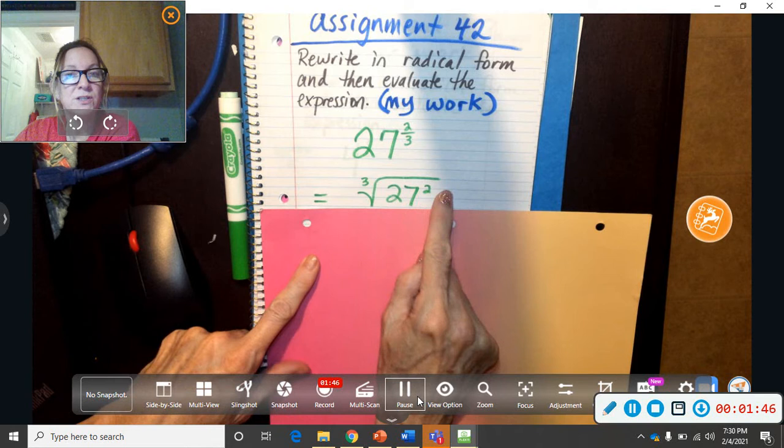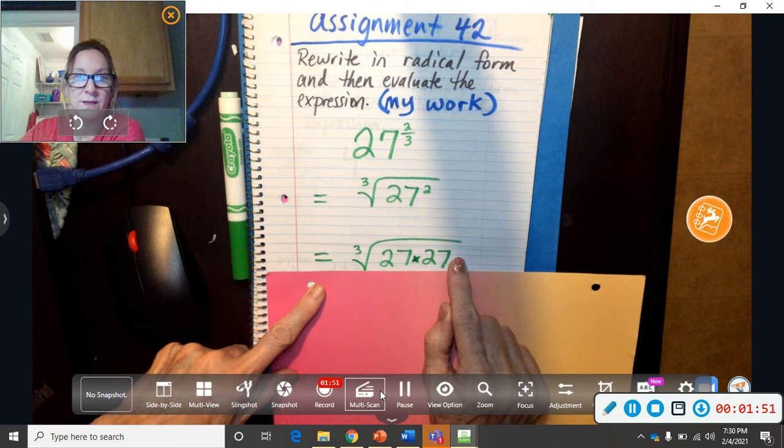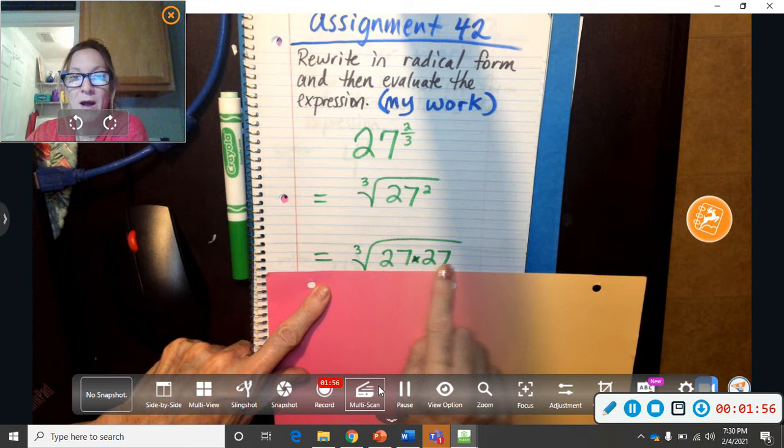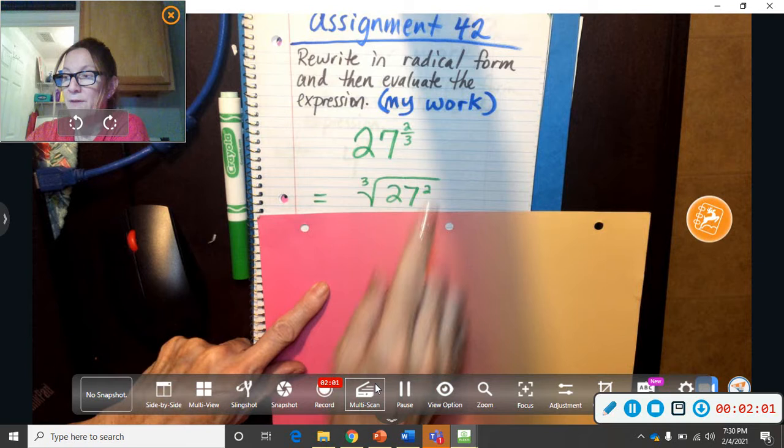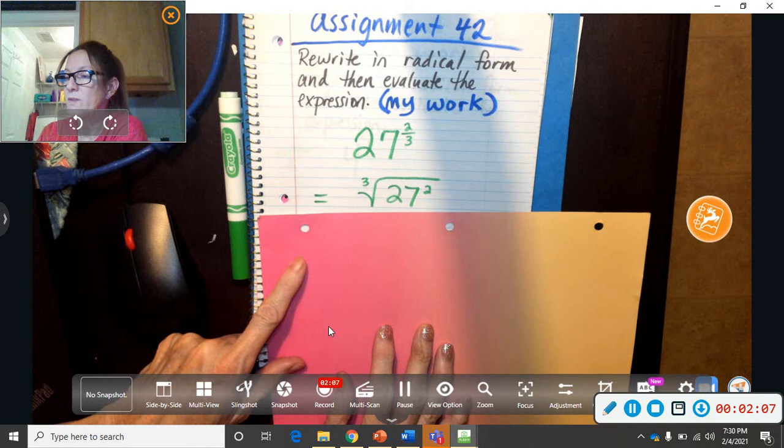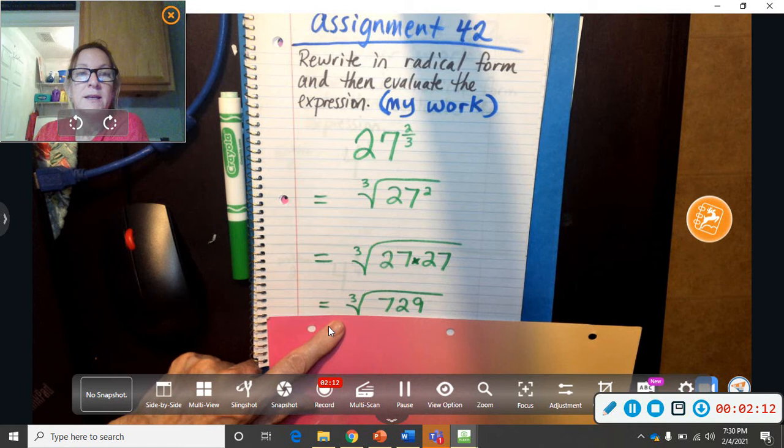So 27 with a 2 in the air, 27 squared means 27 times 27. So I'm going to go ahead and do 27 times 27. You don't have to write it out like that but I just like to do that to remind myself. That's what that means. So I'm going to go ahead and solve. We just got that part, we rewrote it. But if they say rewrite it and evaluate it, that means try to find the answer.